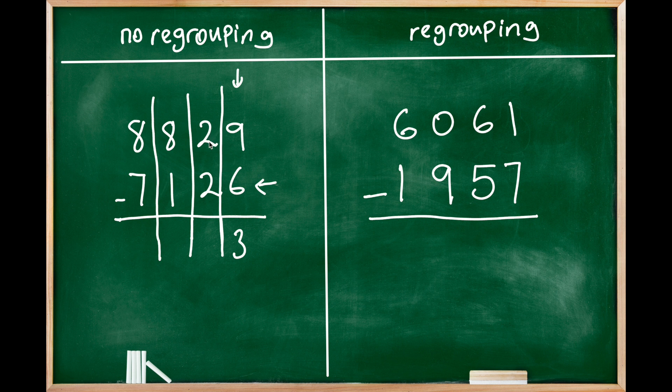Two in the tens place, 2 minus 2 is zero. In the hundreds place, 8 minus 1 is seven.